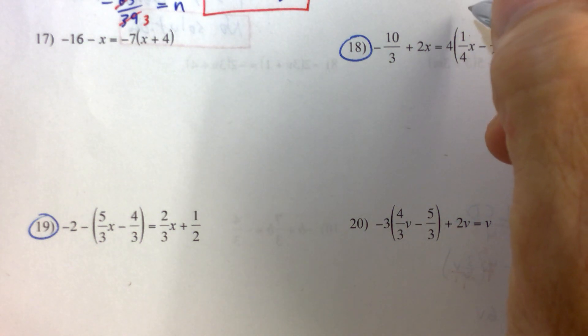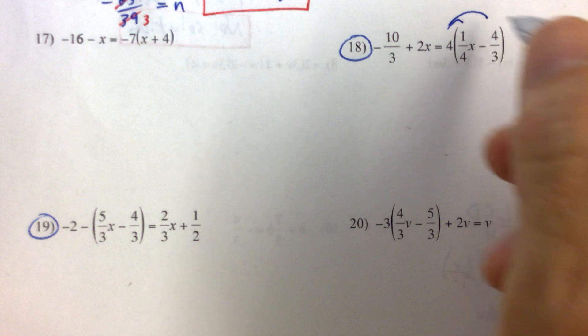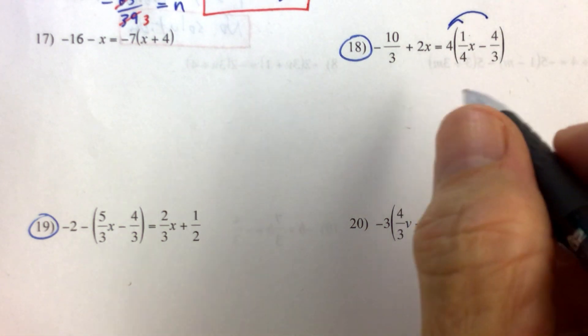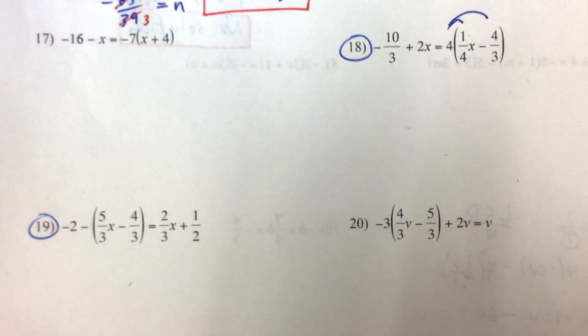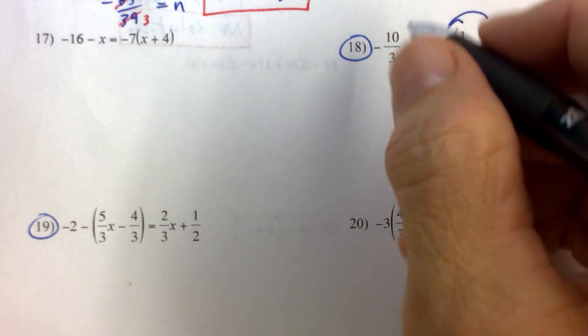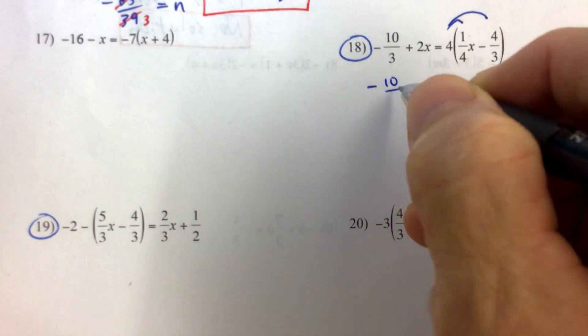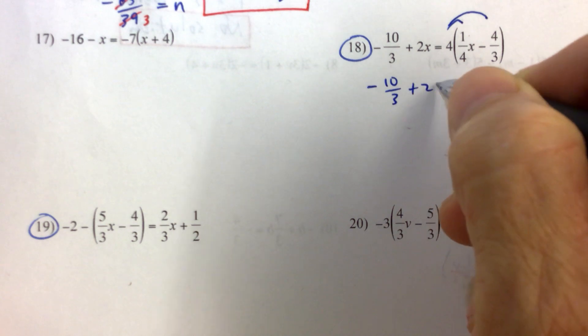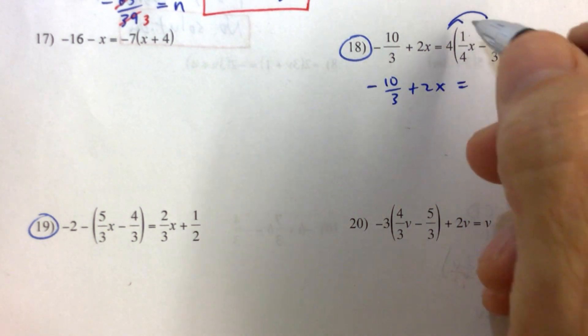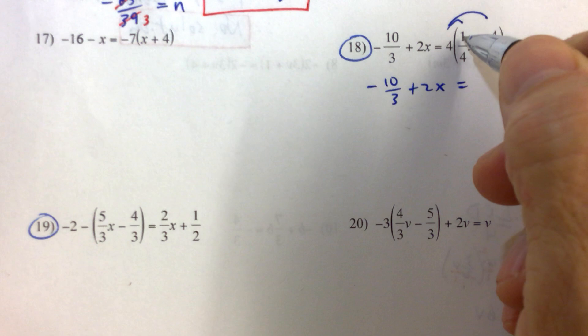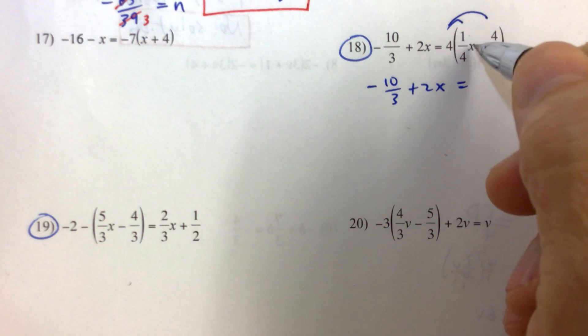So I'm noticing that this 4 right here will be able to cancel with that 4. So if I distribute first, let's watch what happens when we distribute first. So let's not jump the gun here with that lowest common denominator. You can see there's not just one way. The left side becomes negative. This doesn't have anything to simplify there.